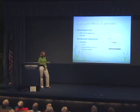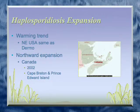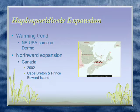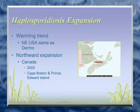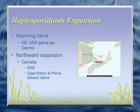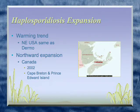Haplosporidiosis has also seen a northward expansion into Canada — it was never seen in Canada before 2002. Prince Edward Island and Cape Breton were hit with a one-two punch: they got MSX for the first time in 2002, and then in 2007 they got Malpique disease.